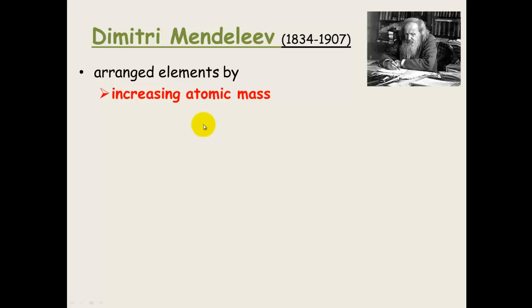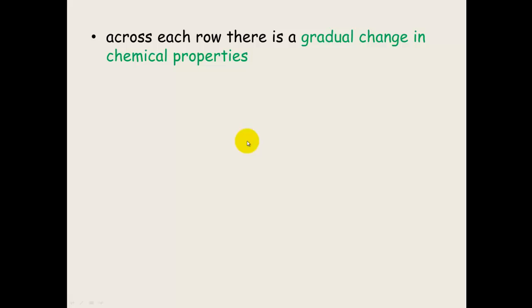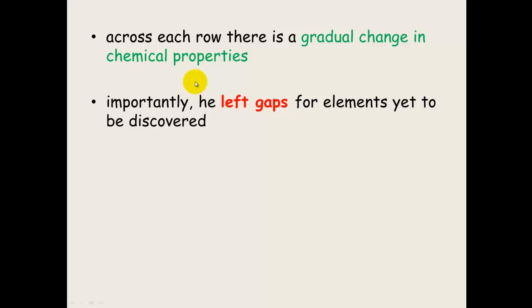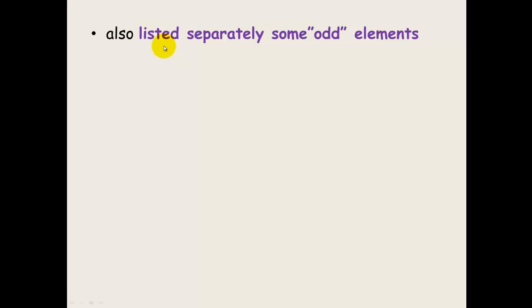Mendeleev arranged the elements both by increasing atomic mass and also with similar chemical properties into groups. So by groups we're talking about downwards and across ways he did atomic number. He noticed that there was a gradual change in chemical properties when you went across each row on the periodic table. And one of the important things he did was he left gaps for elements that were yet to be discovered. So if the element that was next in atomic mass didn't have the same chemical properties as that group, he assumed or predicted that some other element had yet to be discovered.